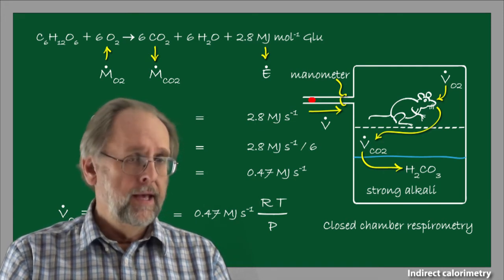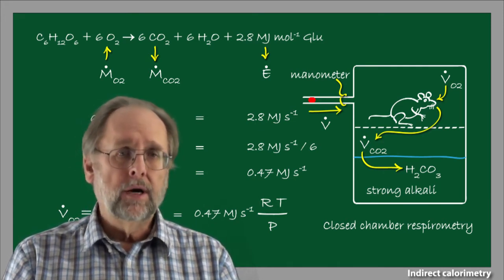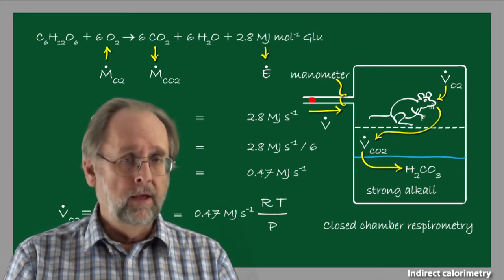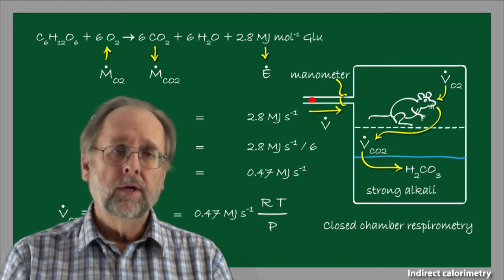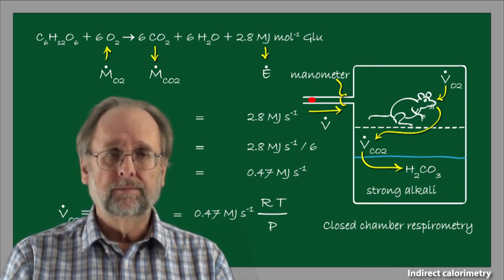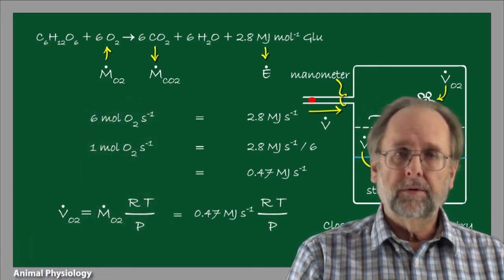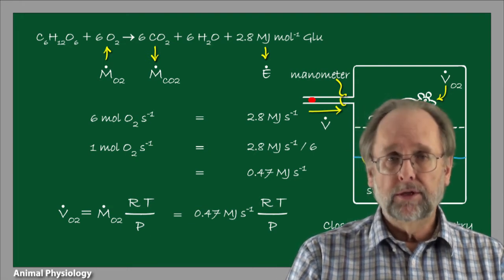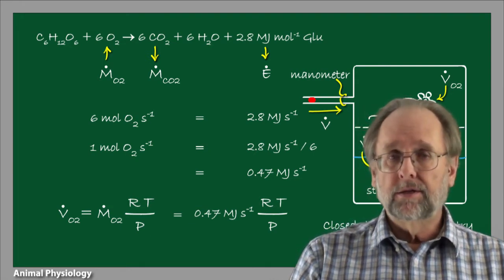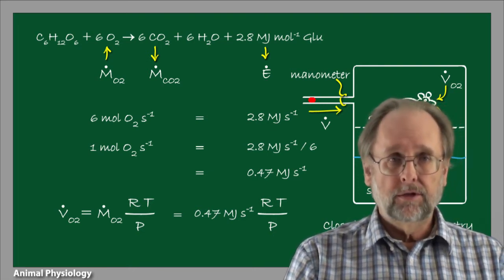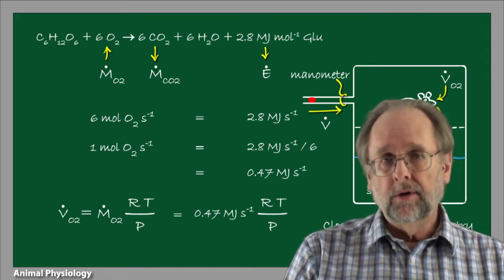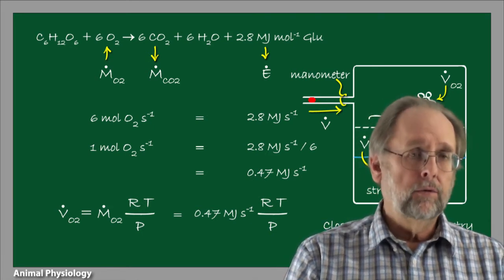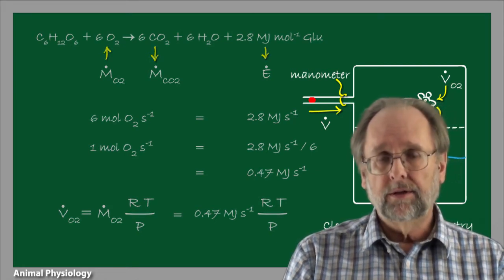Here's where the manometer comes in. As the volume of gas within the chamber declines, the liquid droplet moves along the manometer tube as the pressures between the inside of the chamber and the atmosphere are equalized. If we know the tube diameter and the distance the droplet has moved, we know the total volumetric consumption of oxygen. The principal advantage of closed chamber respirometry is its simplicity — there are no moving parts, and it can be done where there's no power to run machinery. One disadvantage, though, is that oxygen concentration within the chamber goes down with time, and there's always the worry that this lowering oxygen concentration will have detrimental physiological effects and artifacts.